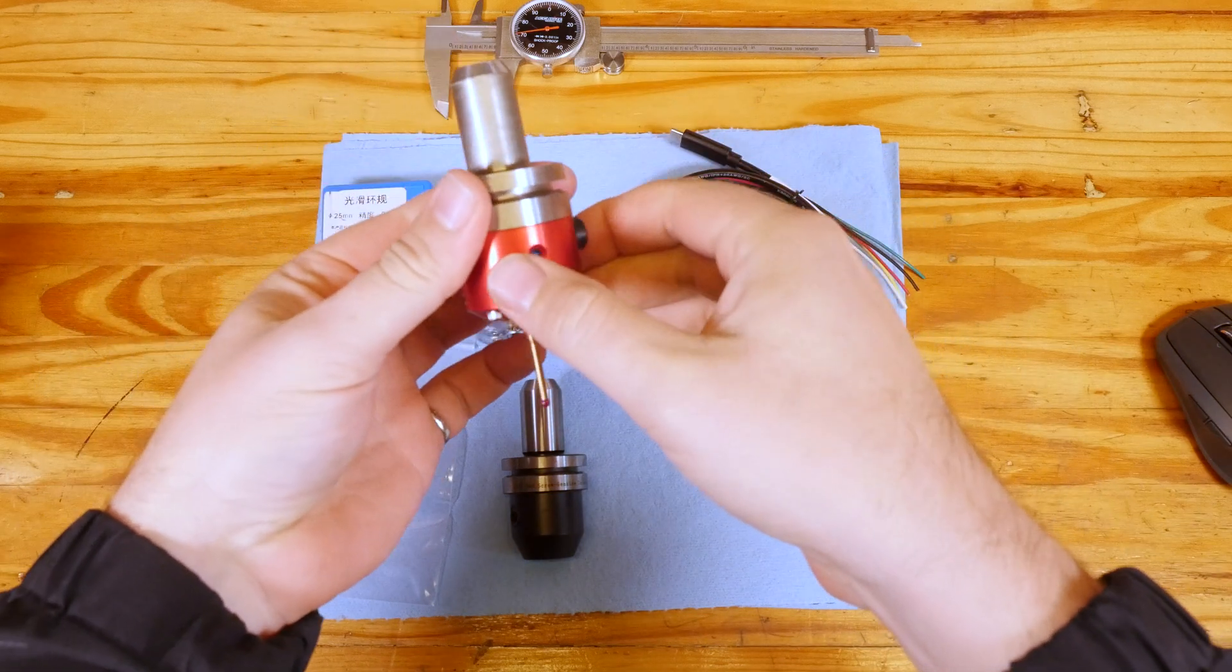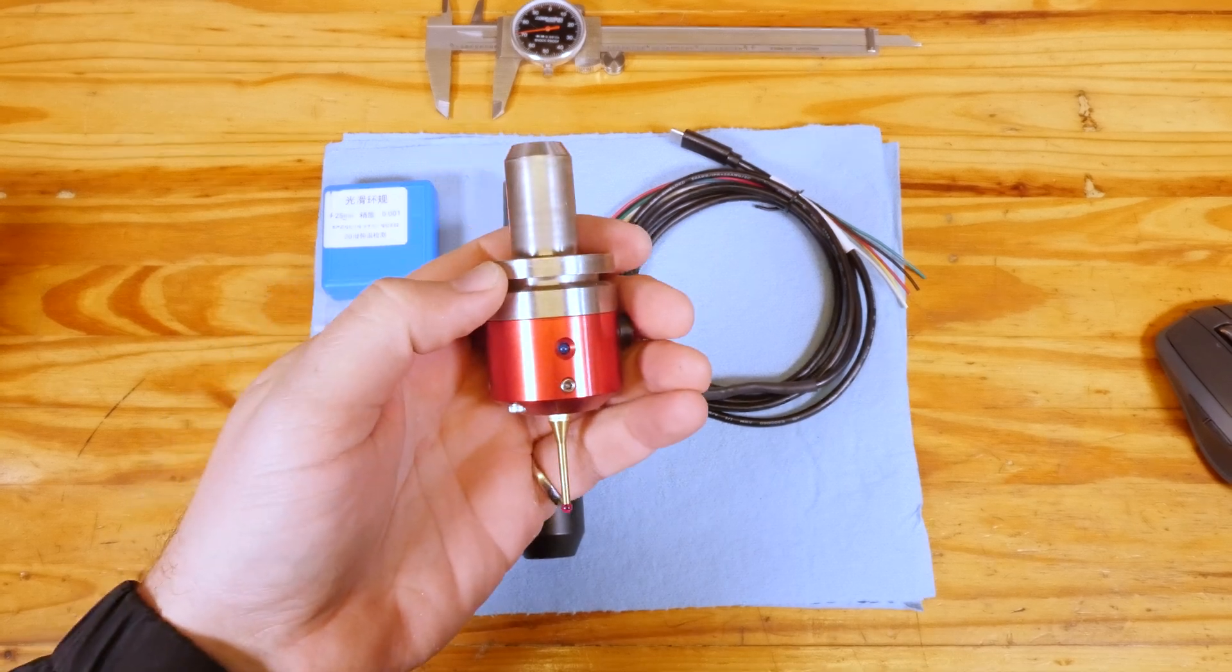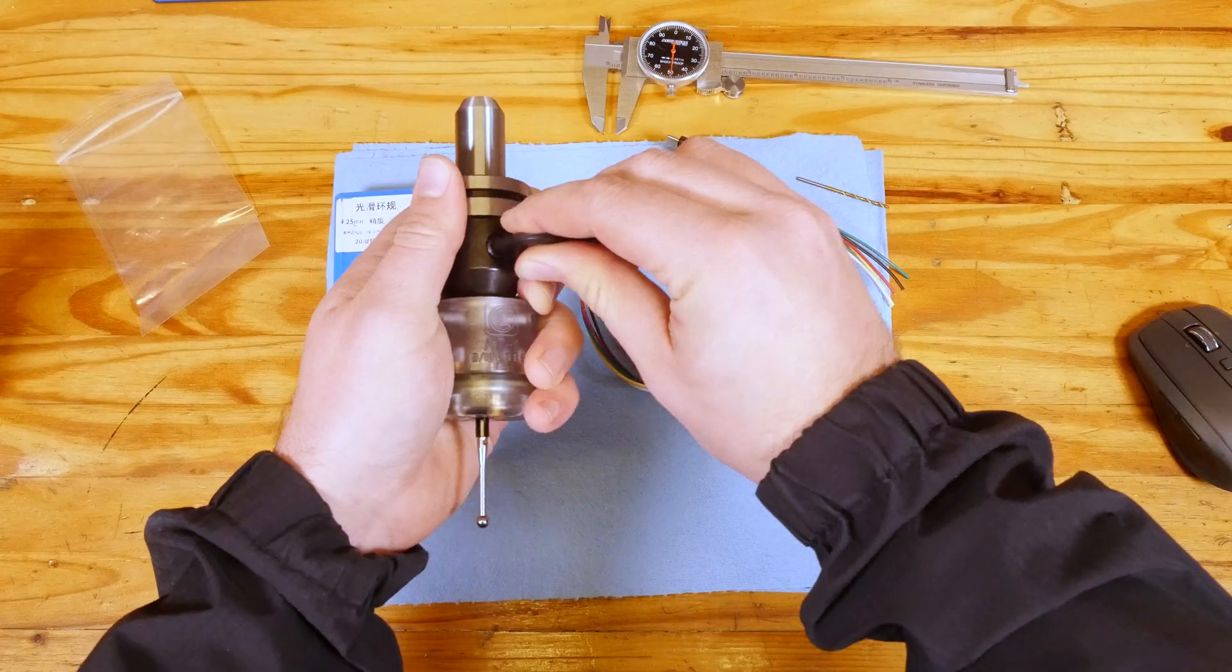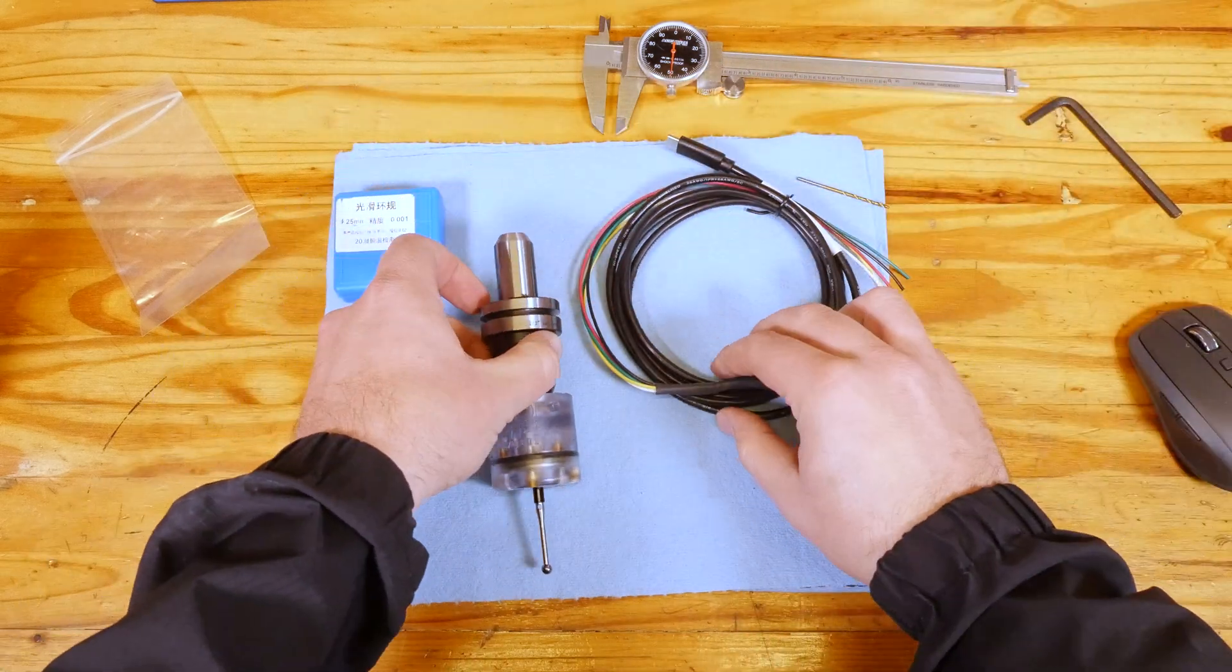Lastly I use the Tormach TTS system on my mill so the Drutronics probe having the option of a TTS style shank is really nice. To use the KP1 on a TTS mill you'll need a dedicated tool holder that lives with your probe.